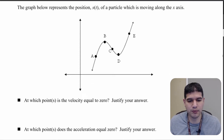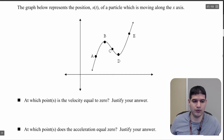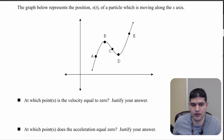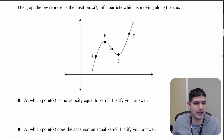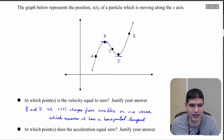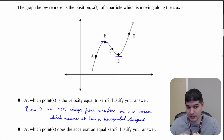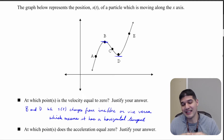So at which point does the velocity equal zero? We always want to justify our answer. Velocity equals zero where we have horizontal tangent lines, so that occurs at points b and d. The reason is that s of t changes from increasing to decreasing or vice versa at those points, which means it has a horizontal tangent there.